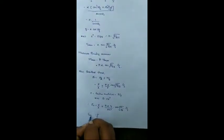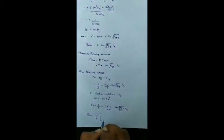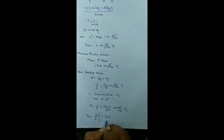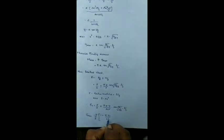Therefore sigma r is equal to P by A plus or minus P into e into y divided by a k square into secant root P by EI into L by 2. So this resultant stress will be the maximum stress which is developed in this column.